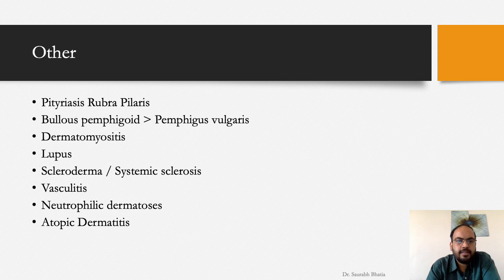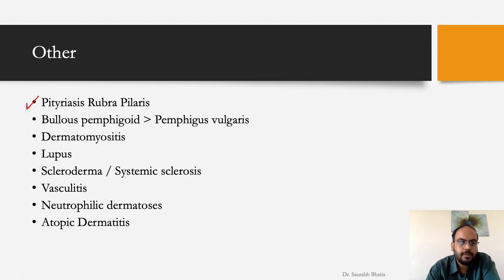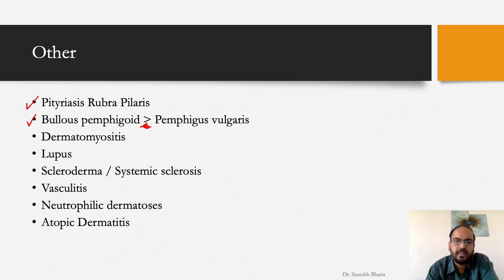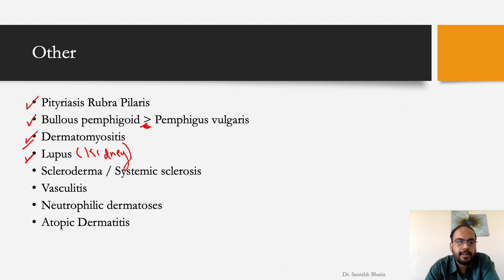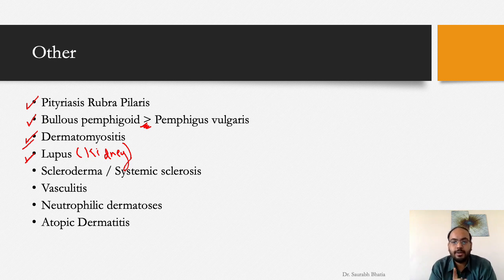Other specific indications from the broader list include: pityriasis rubra pilaris, bullous pemphigoid (more efficacious than in pemphigus vulgaris), dermatomyositis, systemic lupus erythematosus, and cutaneous LE. When treating any LE patient with methotrexate, kidney function tests must be monitored closely, as over 95% of the drug is renally excreted and kidneys can be involved in lupus nephritis.